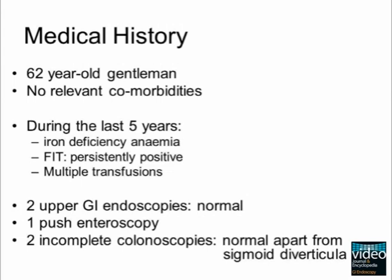Fecal immunochemical tests were persistently positive. He underwent two gastroscopies and one push enteroscopy. Two colonoscopies were attempted but results were incomplete because of the tortuosity and poor patient compliance. The colon was explored up to the hepatic flexure. No relevant findings were diagnosed in the portions explored apart from sigmoid diverticula without signs of inflammation or bleeding. The site of the bleeding was never identified.